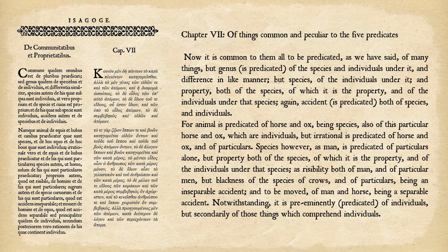'Horses are animals' or 'this horse is an animal.' Species, however — as man — is predicated of particulars alone. Property is predicated both of the species of which it is the property and of the individuals under that species. Risibility belongs both to man and to particular men. Blackness belongs to the species of crows and of particulars, being an inseparable accident.